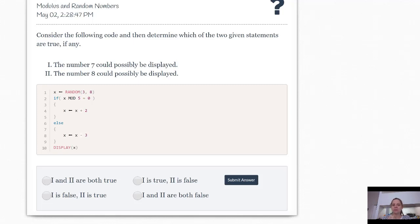Hi, this is Ms. Hall and we're going to review modulus and random numbers. Consider the following code and then determine which of the two given statements are true, if any. One, the number 7 could possibly be displayed. Two, the number 8 could possibly be displayed.